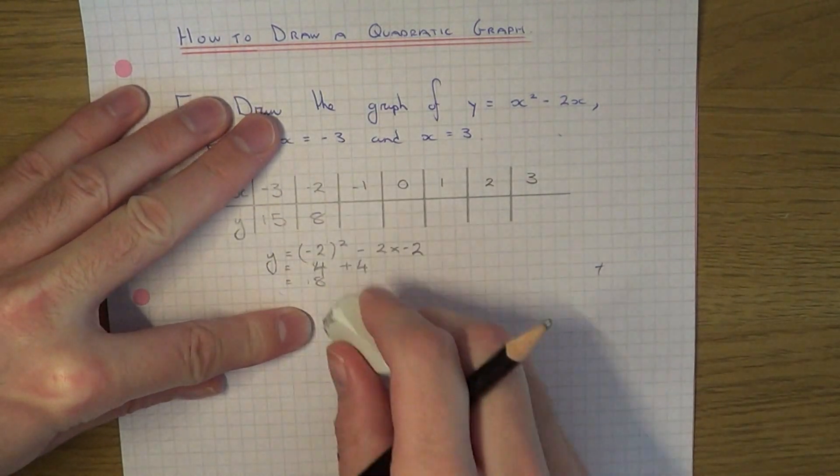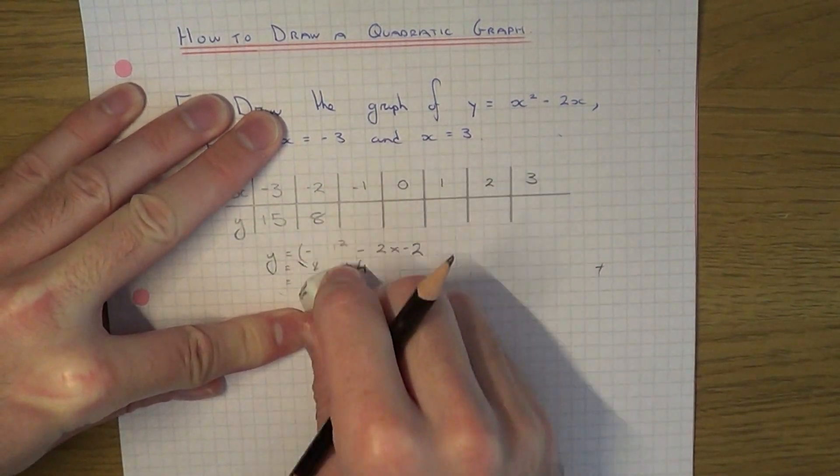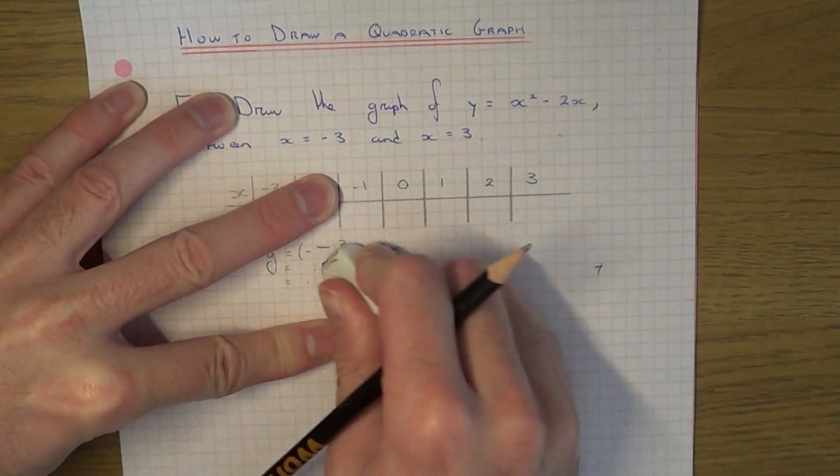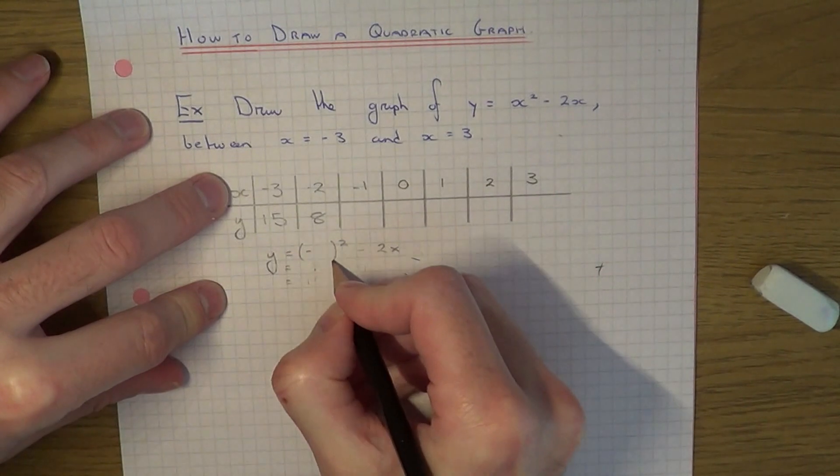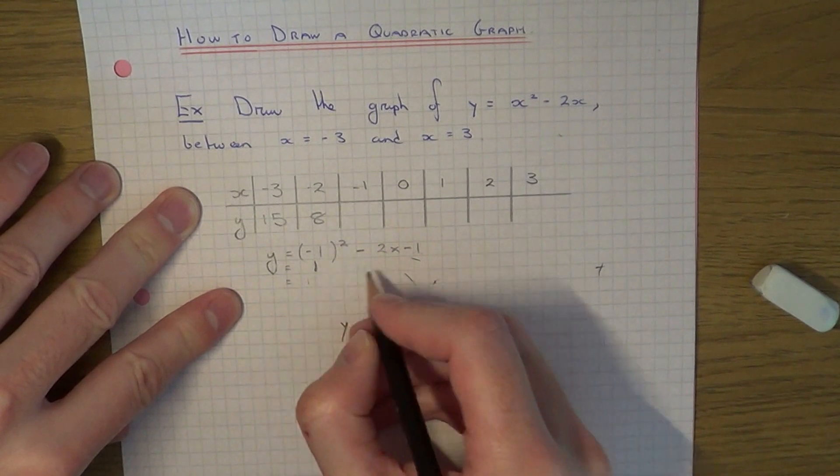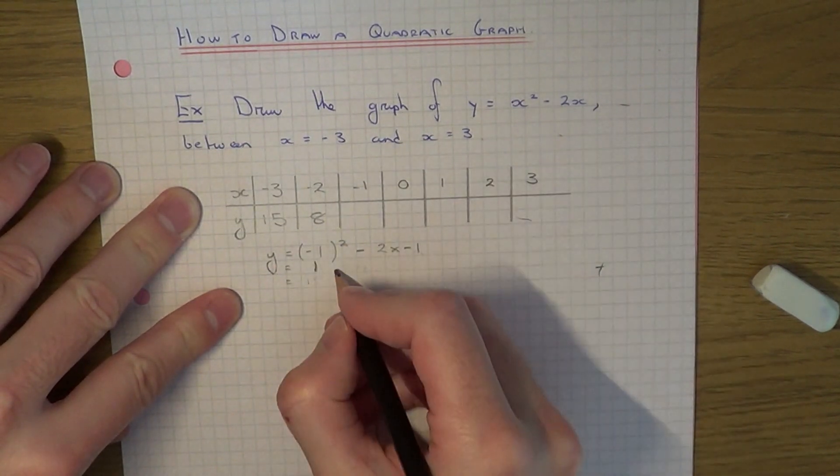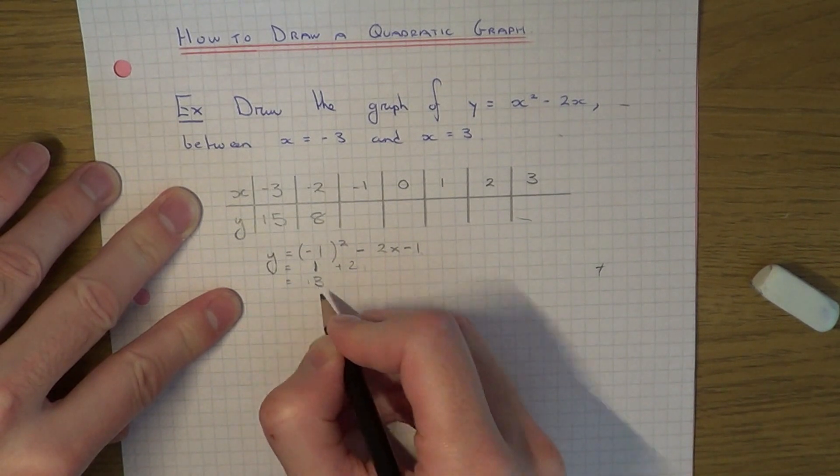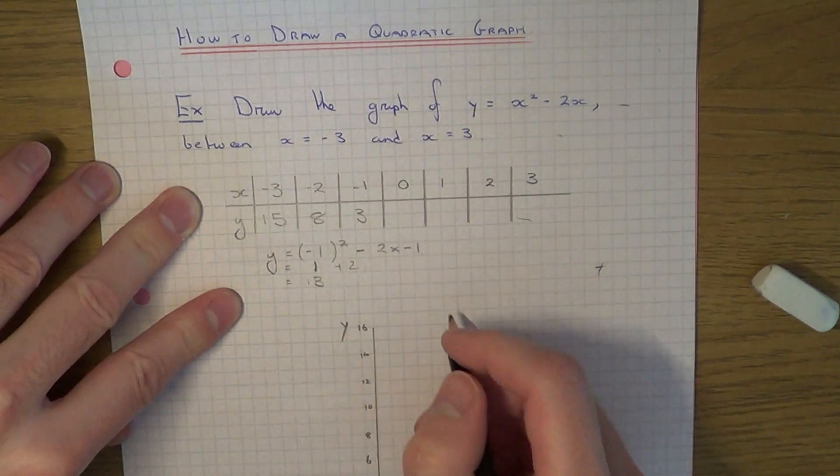Our next x coordinate is minus 1. Let's sub those ones in this time. Minus 1 squared is plus 1. Minus 2 times minus 1 is plus 2. And 1 add 2 is 3. So our next coordinate is 3.